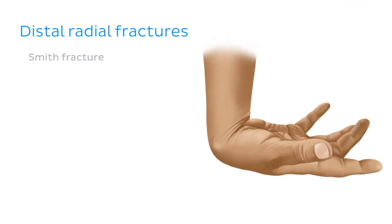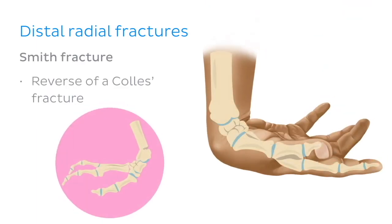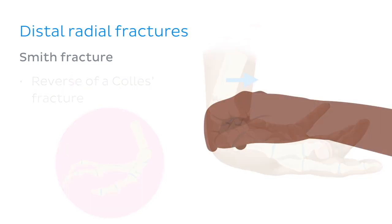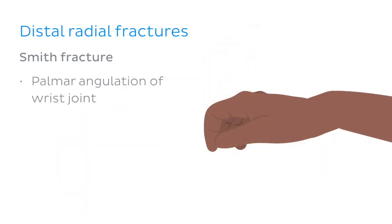Another type of distal radial fracture is known as Smith fracture, which is in essence the reverse of a Colles fracture, in that broken bone fragments are displaced anteriorly, causing palmar angulation of the wrist joint instead.